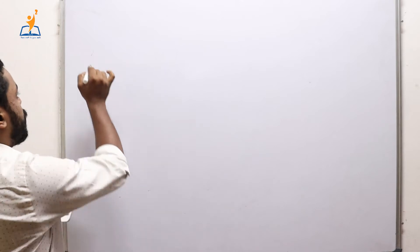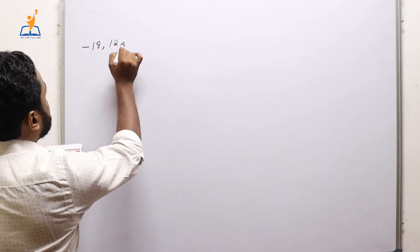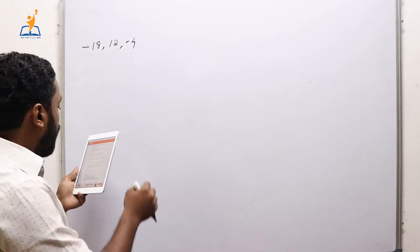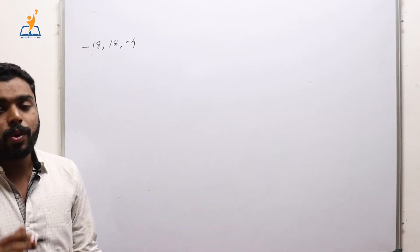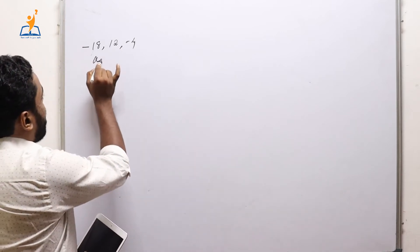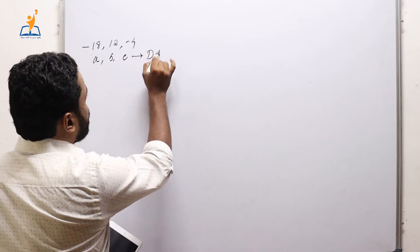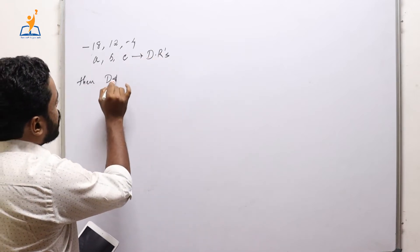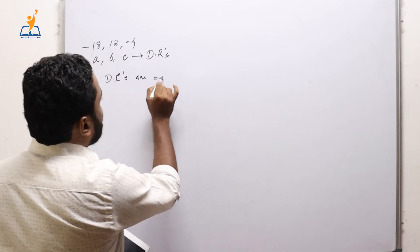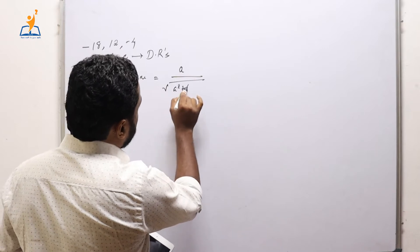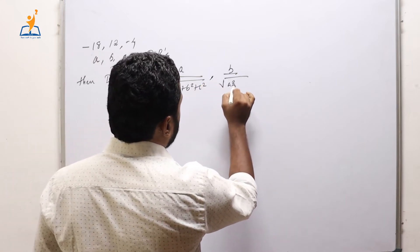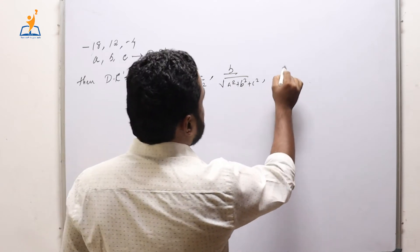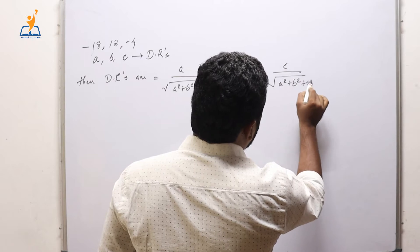Moving to the third question: if a line has direction ratios −18, 12, and −4, what are its direction cosines? We are given direction ratios a, b, c and we know that if a, b, c are the direction ratios, then the direction cosines are a/√(a²+b²+c²), b/√(a²+b²+c²), and c/√(a²+b²+c²).